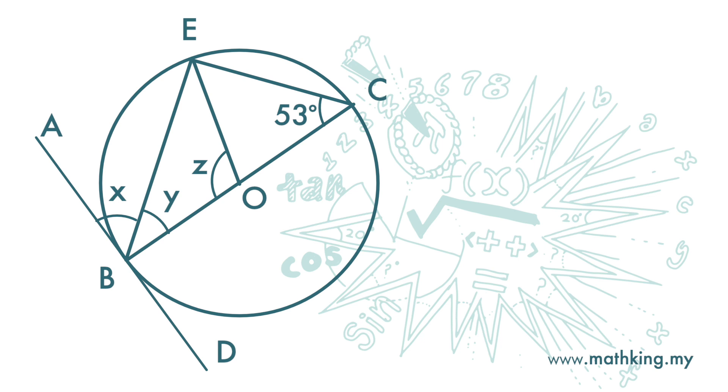Find x, y, and z. This is the tangent. This is the chord. And this is the alternate segment to angle x. Then x and 53 degrees are equal.